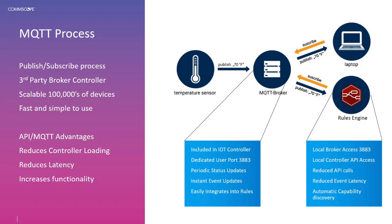Using MQTT also reduces event latency. Rather than having to poll — and if you just missed an event the next poll is when you'll get that update — with long polling frequencies you can easily miss events or have quite large latencies. The event published to arrival at the application is much quicker because it's a pushed event.